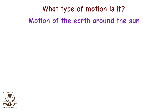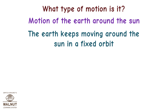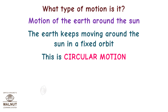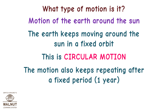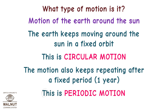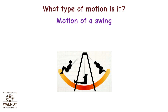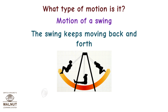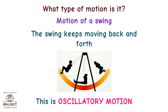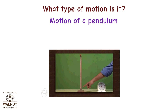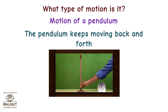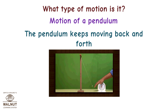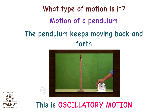Motion of the Earth around the Sun — the Earth keeps moving around the Sun in a fixed orbit. This is Circular Motion. The motion also keeps repeating after a fixed period, i.e. one year. This is Periodic Motion. Motion of a Swing — the swing keeps moving back and forth. This is Oscillatory Motion. Motion of a Pendulum — the pendulum keeps moving back and forth. This is Oscillatory Motion.